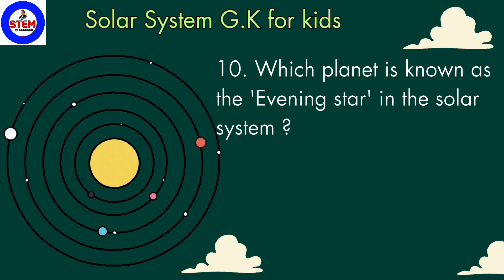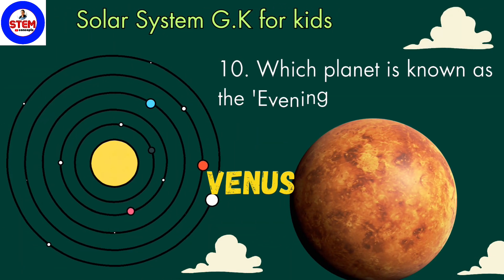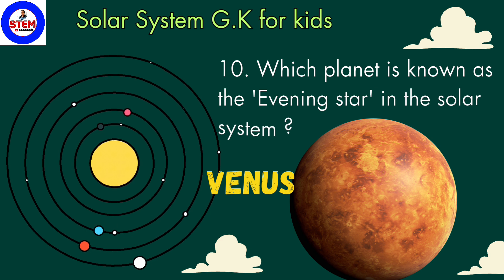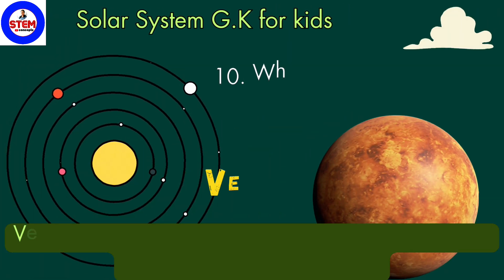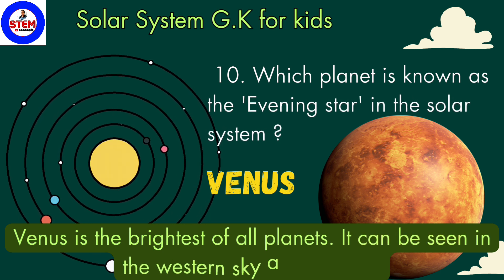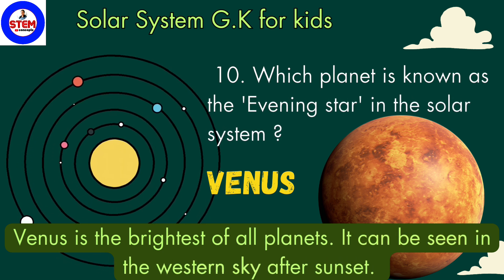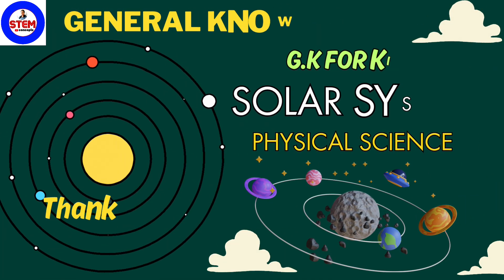Tenth question: which planet is known as the evening star? The answer is also Venus. Venus is known as both the morning star and the evening star because it is the brightest of all planets. It can be seen in the western part of the sky after sunset.